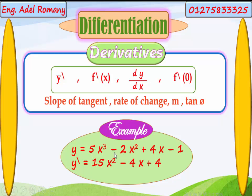The second term: minus 2x to the power of 2. Same rule — we multiply the power 2 by the coefficient negative 2. 2 by negative 2 gives us negative 4, and x to the power of 1. We decrease the power by 1: power 2 becomes power 1. We don't write power 1.